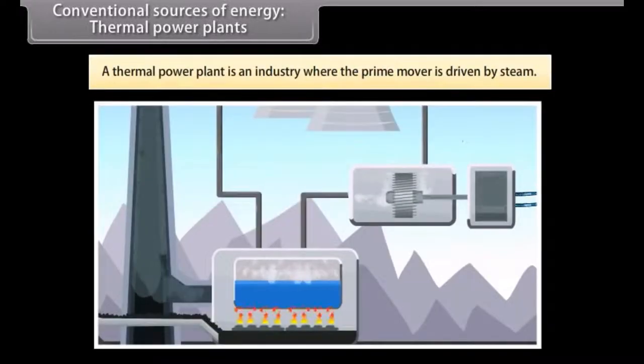Conventional sources of energy: Thermal power plants. A thermal power plant is an industry where energy is generated by steam. Here, water is heated and then turned into steam. This in turn spins a steam turbine driving an electrical generator. After it passes through the turbine, the steam is condensed in a condenser and recycled to where it was heated.